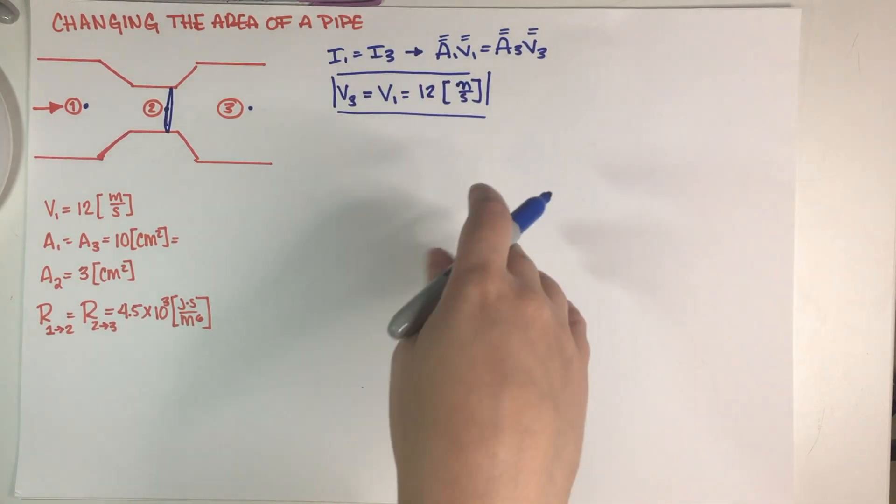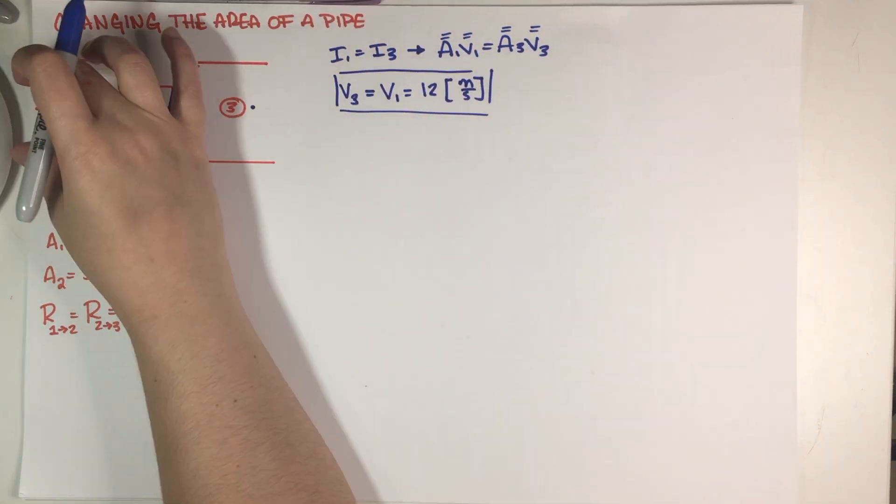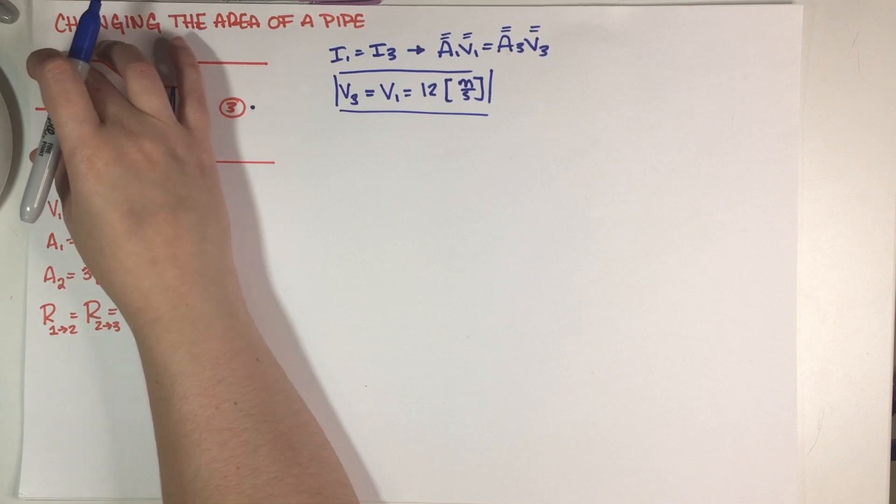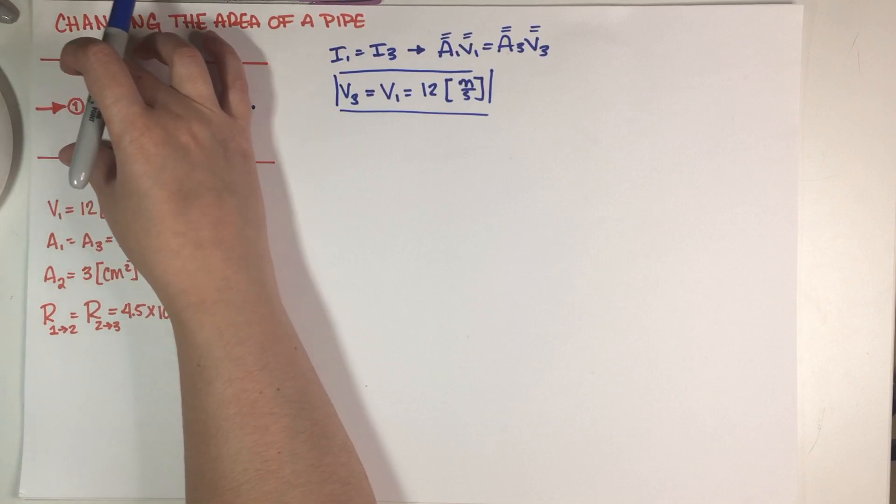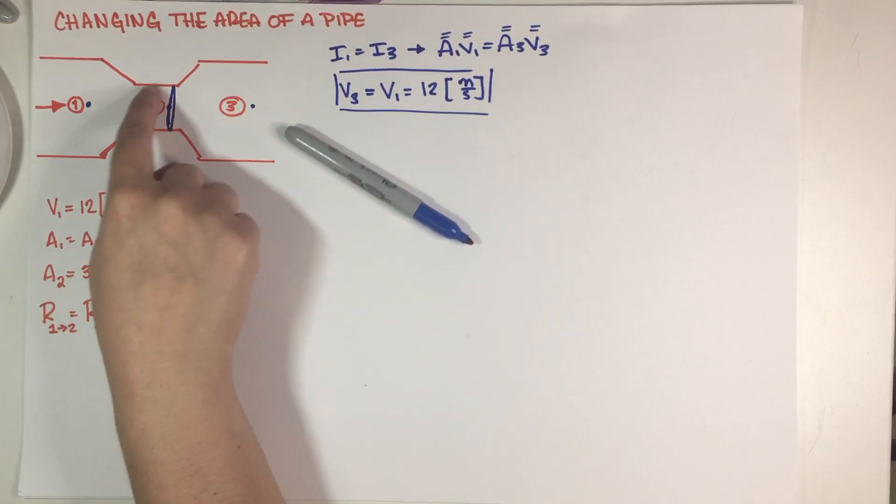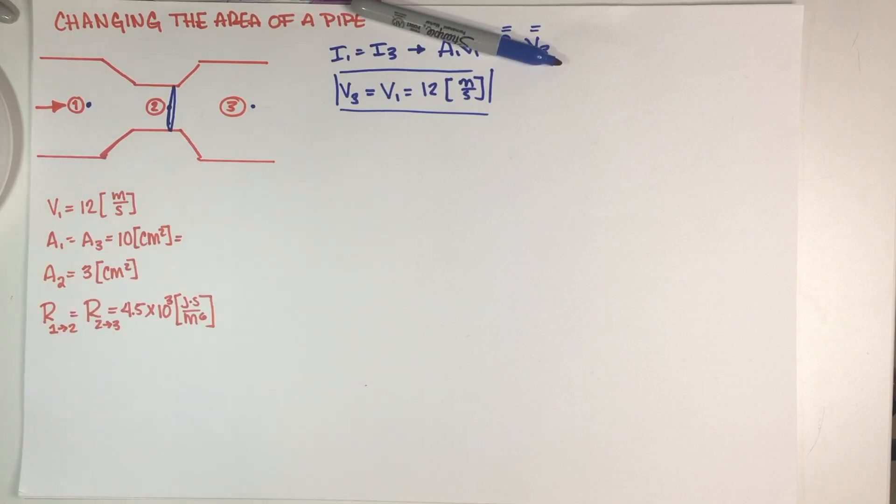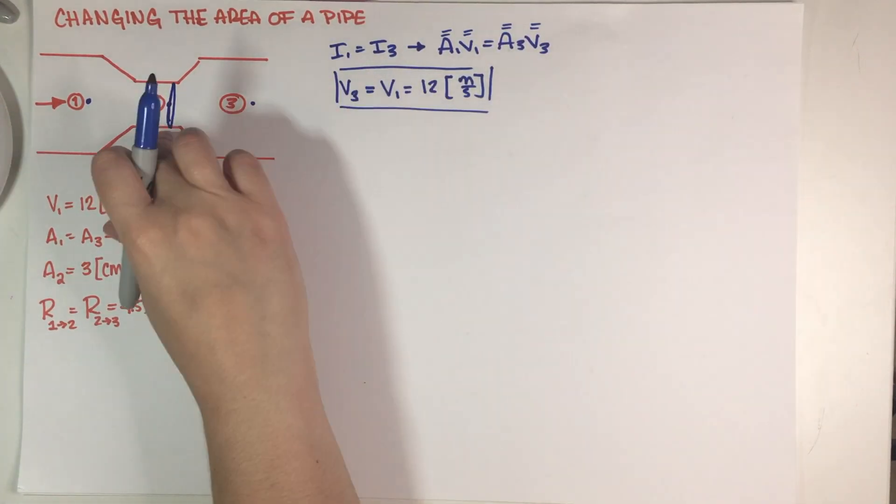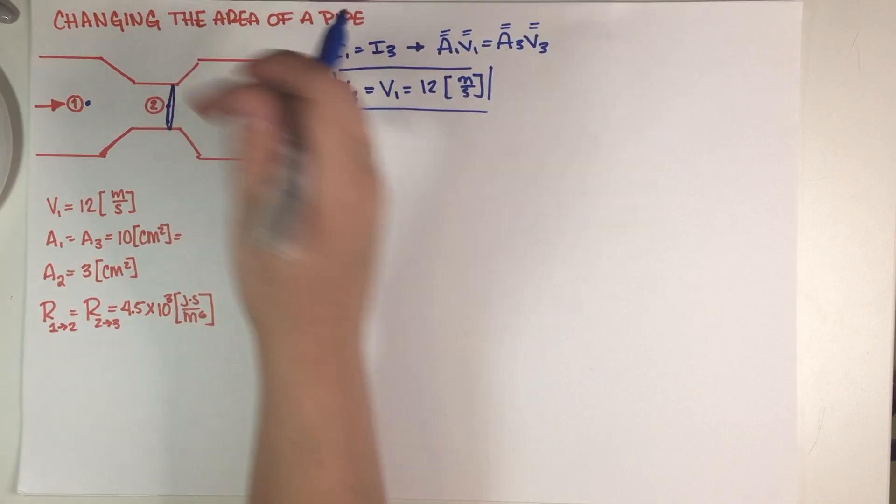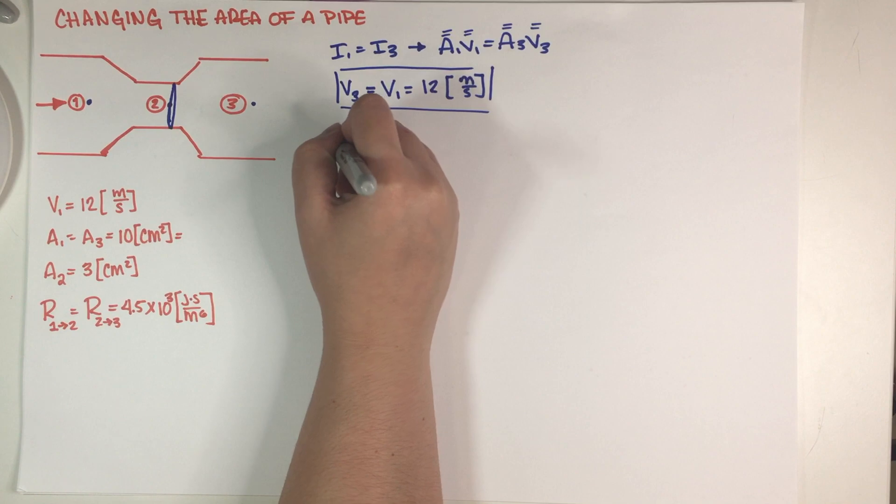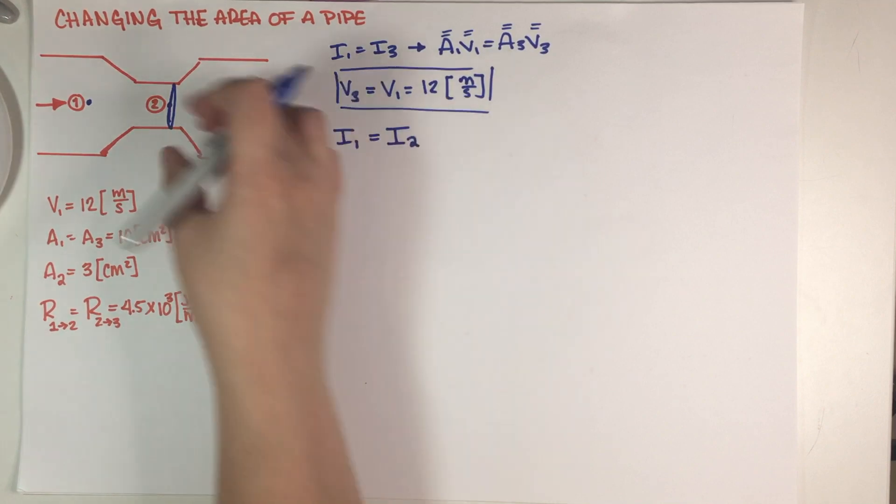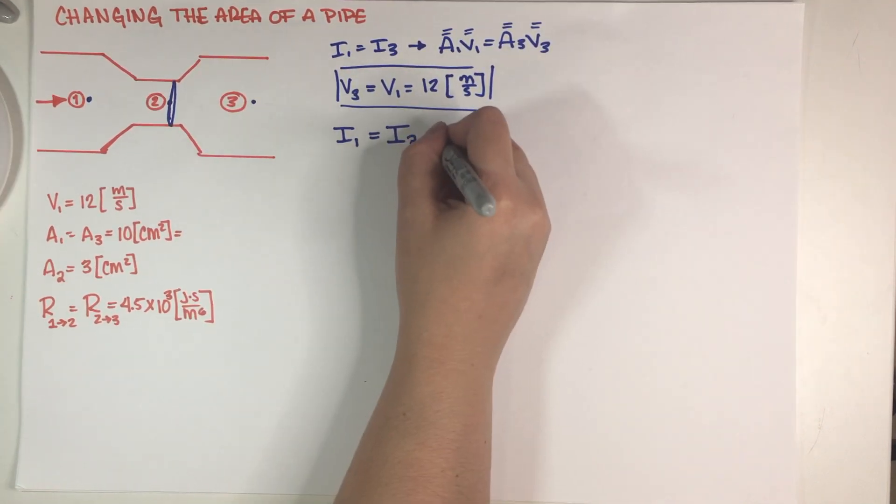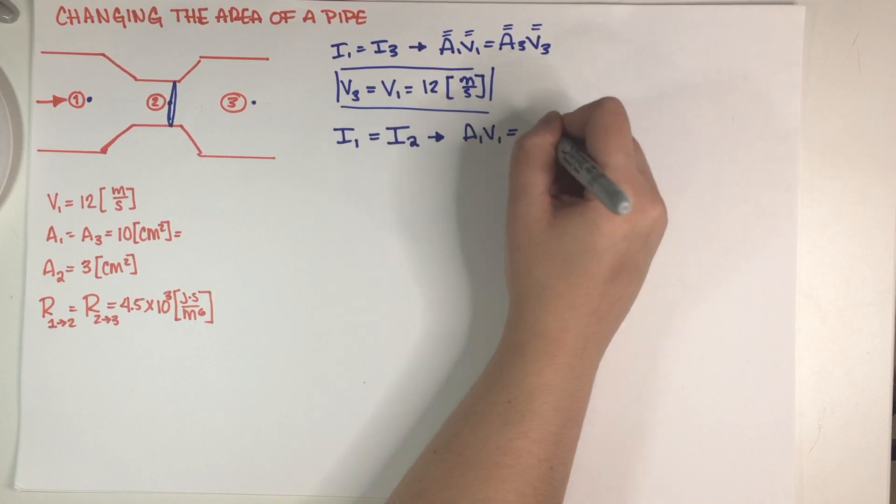However we can still use our continuity equation because whatever air goes through here, it's air, so whatever air is moving through here must also cross this section over here. So the continuity equation is also going to apply from here to here. What this means in terms of equations is that what goes through 1 also passes through this chunk right here.